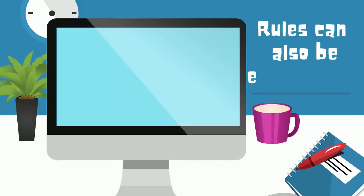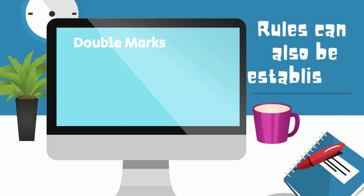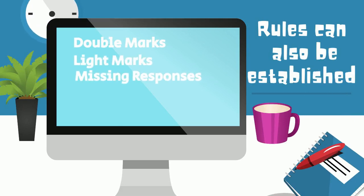Rules can also be established that force a field to be reviewed by an operator for editing. These include double marks, light marks, missing responses, invalid IDs, out of range marks, and more.